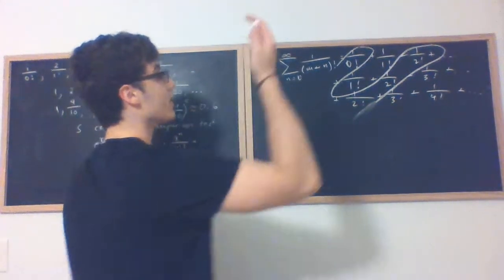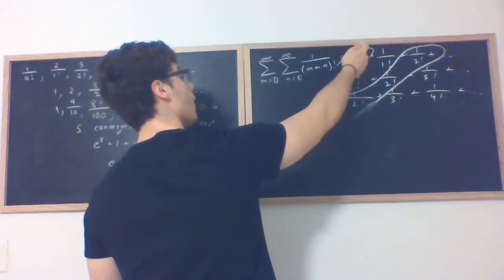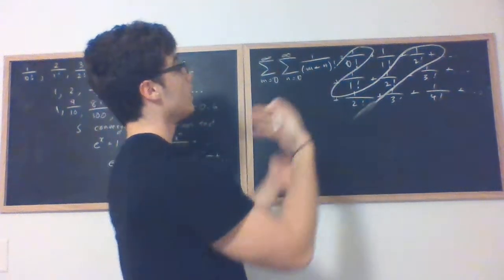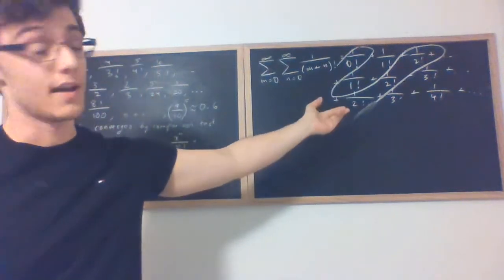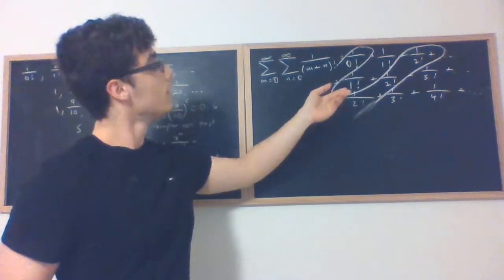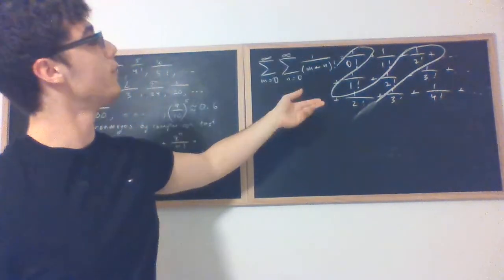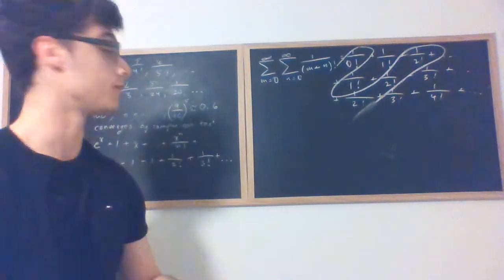And the advantage of this is that it makes the structure that existed within the sum more apparent. Which means you're going to get 1 over 0 factorial 1 time, 1 over 1 factorial 2 times, 1 over 2 factorial 3 times, 1 over 3 factorial 4 times, and so forth.